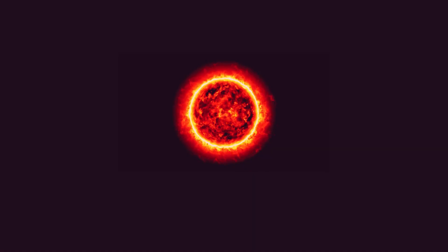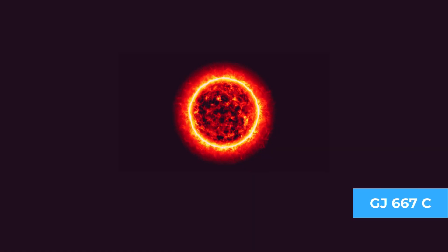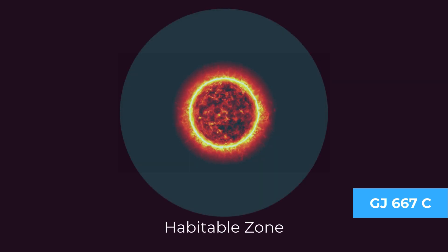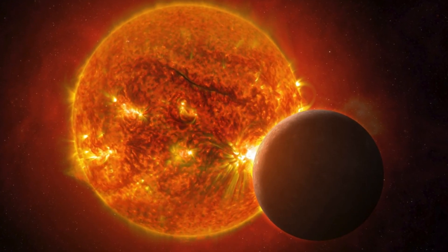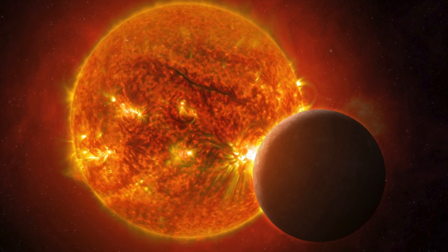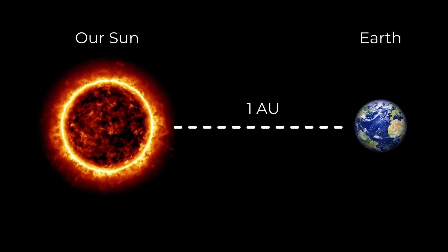Due to the red dwarf GJ 667C's low energy output, the habitable zone is remarkably close to the star, spanning from 0.11 to 0.23 AU, entirely within the orbit of Mercury. For comparison, Earth resides at approximately 1 AU from the Sun.